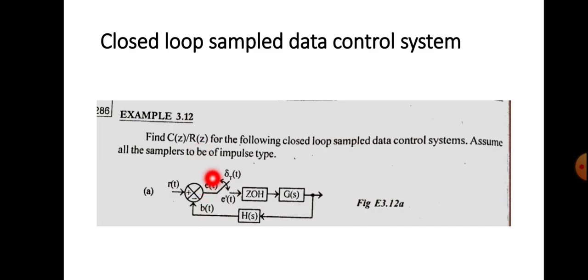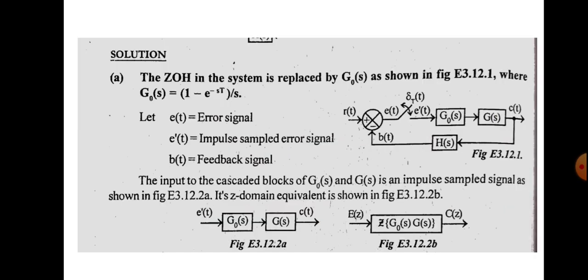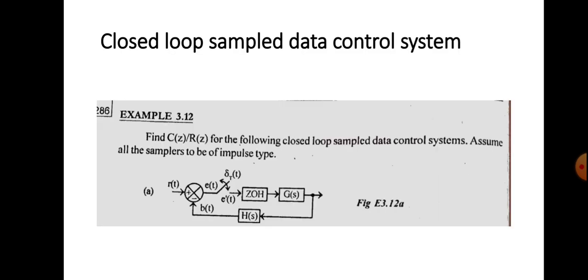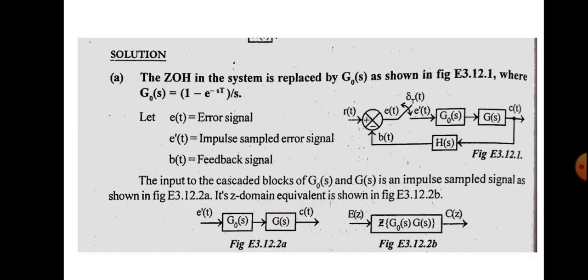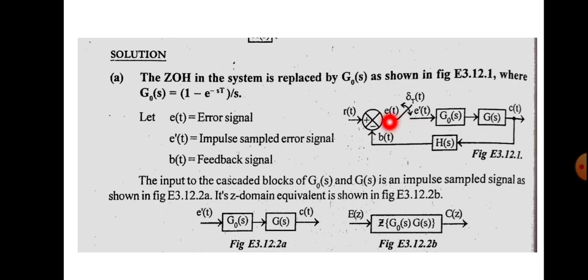To find C(z)/R(z), we first represent what e(t) and b(t) are. There is also a zero-order hold device in the forward path, which we replace with G0(s) = (1 - e^(-sT)) / s. We redraw the block diagram with G0(s) in place of the ZOH. The error signal is e(t), its sampled version is e*(t), and b(t) is the feedback signal.